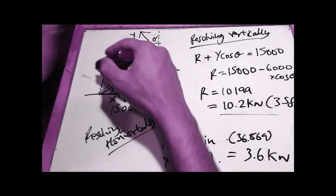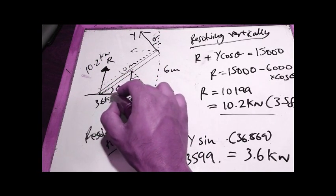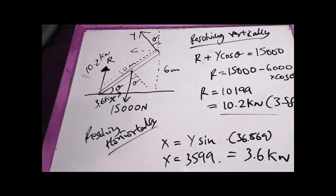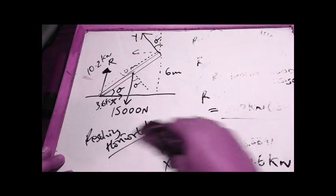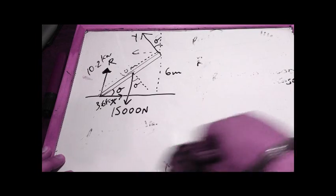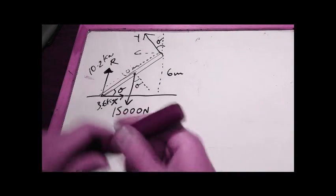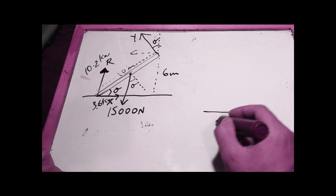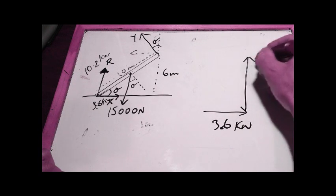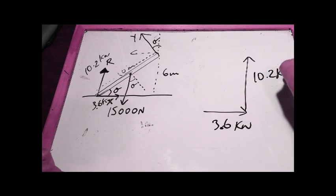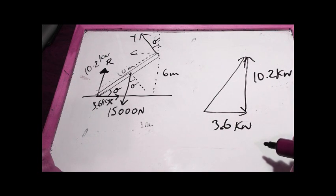So I've got 10.2 kilonewtons here, I've got 3.6 kilonewtons here, and now they're going to ask me to work out the magnitude, the magnitude, which is the overall resultant, if you like, of these two forces. And so that's going to be, I've got a force going along which is 3.6 kilonewtons, I've got a force going up which is 10.2 kilonewtons, they want this, they want this guy, they want the resultant, they want the magnitude.